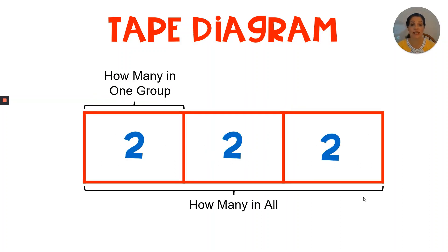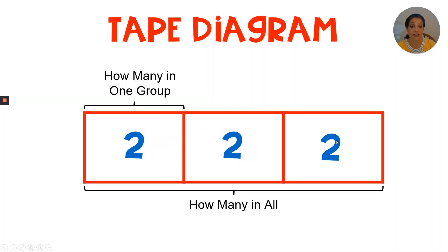Here's an example of a tape diagram. Each box tells how many are in one group. You'll see there's a bracket and a label. This tells me that one group has two in it. The whole tape diagram tells me how many in all. How many in all is also labeled at the bottom of the tape diagram. I have three boxes with two in each box.